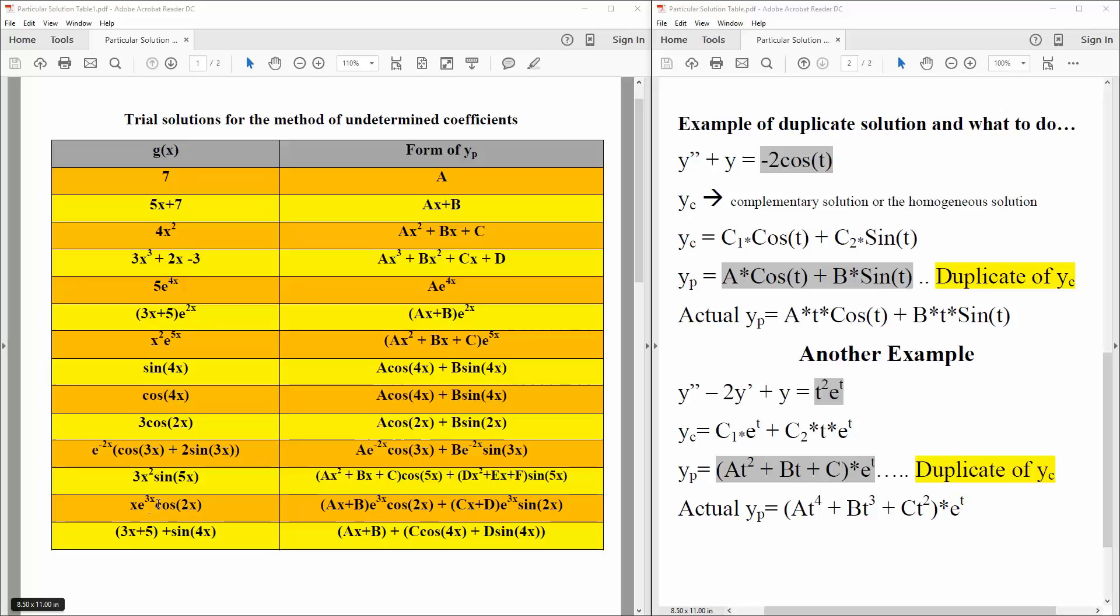Then we have x times e raised to 3x, cosine 2x, so we would get ax plus b, e raised to 3x, cosine 2x, plus cx plus d, e raised to 3x, sine 2x.